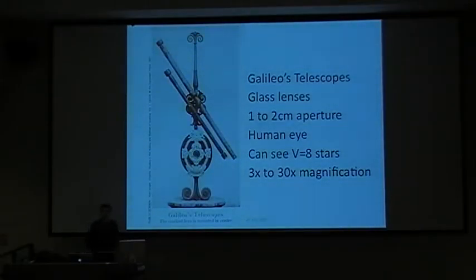Here's a couple of images of Galileo's telescopes. You can tell they're really old because the photograph's black and white. The telescopes that Galileo used had spherical glass lenses with a clear aperture of one or two centimetres, comparable to a very small set of binoculars. The detector was the human eye. With such telescopes, one could see objects about a factor of ten fainter than what the unaided eye can see.